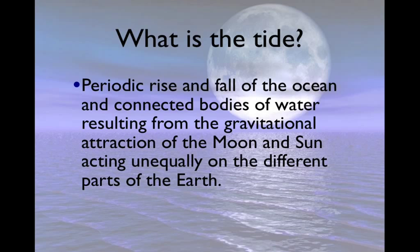So what is a tide? It's the periodic rise and fall of the ocean and connected bodies of water, resulting from gravitational attraction of the Moon and the Sun, and how they act unequally on the different parts of the Earth. We're basically going to go through every piece of this as we go through this.